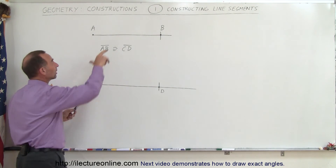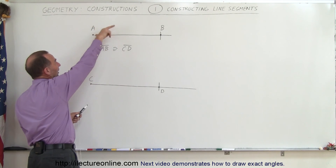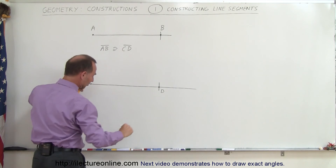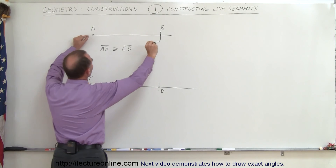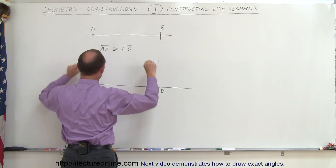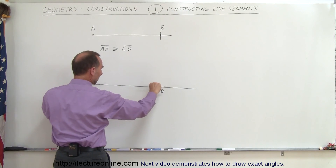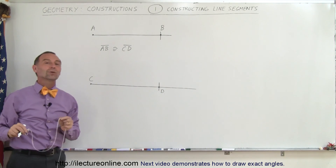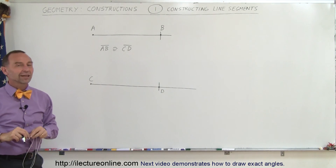That's how we construct a line segment from another line segment, making sure it's the exact same length. Normally you would use a compass, but since mine isn't large enough, I use a string — draw the arc here, draw the arc there, and you have an exact congruent line segment.